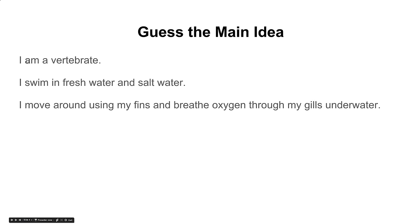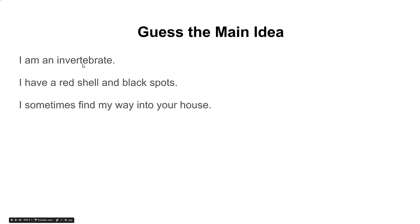Guess the main idea. I am a vertebrate. I swim in fresh water and salt water. I move around using my fins and breathe oxygen through my gills underwater. Hmm — what's the main idea of this paragraph? Let's try this one: I am an invertebrate. I have a red shell and black spots. I sometimes find my way into your house. Hmm — what's the main idea here?